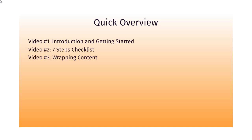Video number three is wrapping content — essentially the content that surrounds the image, both before and after it. That content is crucial and really needs to describe the image so that you attract the right person and Google knows exactly what that image is about. Video number four will talk about file format and why that is important. Video number five will talk about image size, and depending on the niche, different sizes can change — you may notice that Google likes specific image sizes.